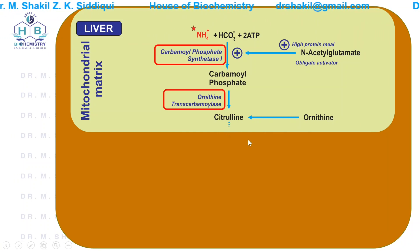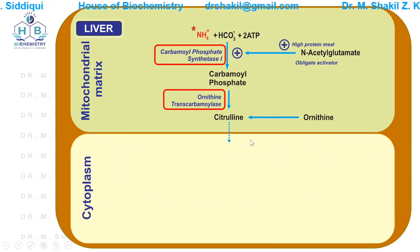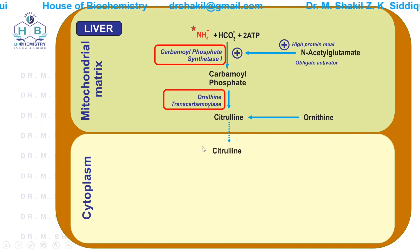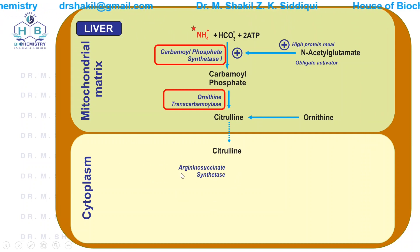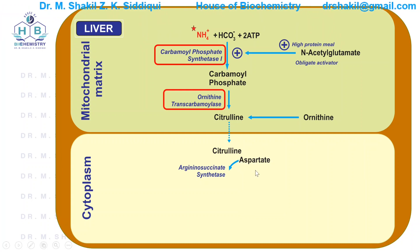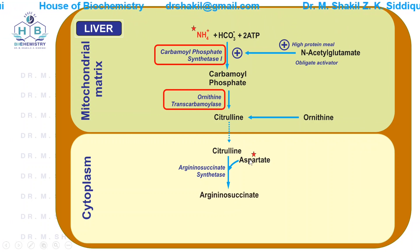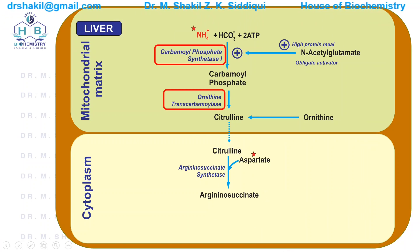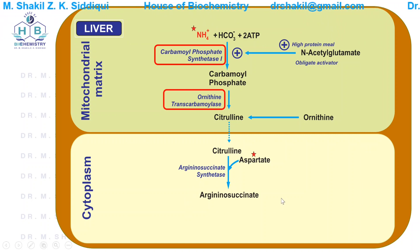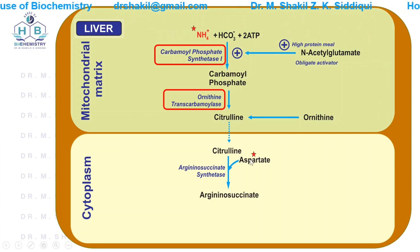When citrulline is formed, it leaves the mitochondria and enters the cytoplasm. In the cytoplasm, another enzyme — arginosuccinate synthetase — acts on citrulline and condenses it with aspartate to form arginosuccinate. This aspartate contributes the second nitrogen atom for urea formation. The enzyme uses one ATP in this process.